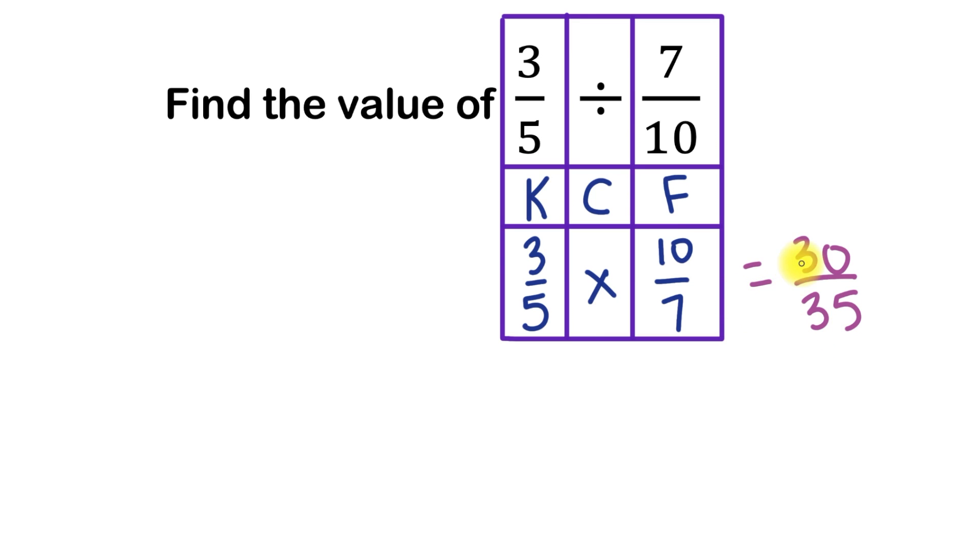So our answer so far is 30 over 35. And the reason why I say so far is because this is a fraction that can be reduced. And I'm just going to rewrite it over here so we have a little bit more space to show how it's going to get reduced.